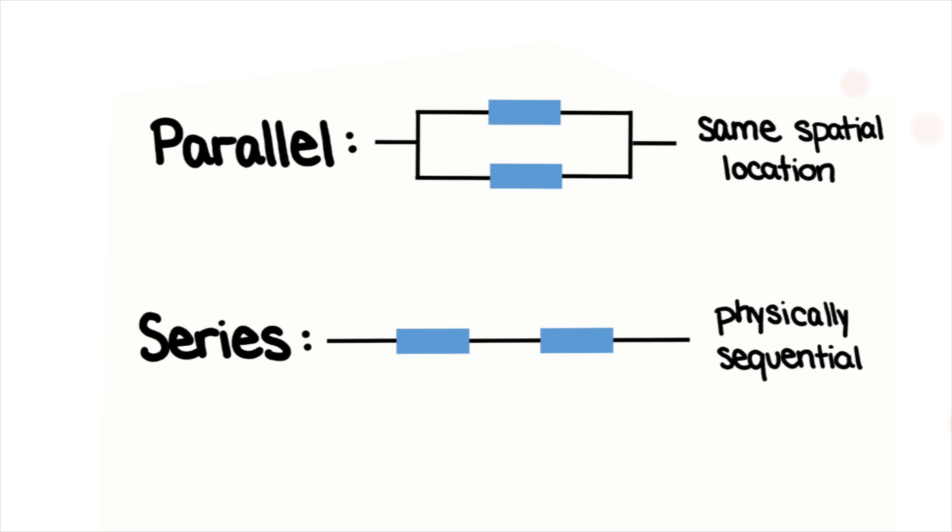This is a very simplified example, but it demonstrates how equivalent circuit fitting generally works. Elements in parallel occur at the same spatial location, whereas those in series are physically sequential.